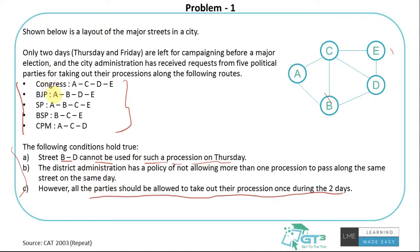So if Congress is doing the journey on one day, taking routes A-C, C-D, and D-E, I cannot have CPM doing it on the same day. Why? Because they also need Street AC.